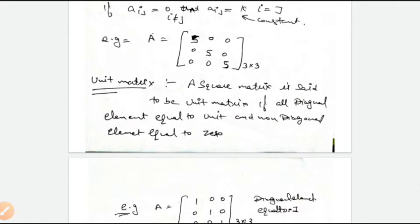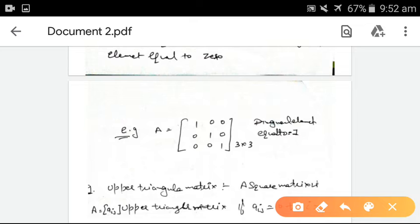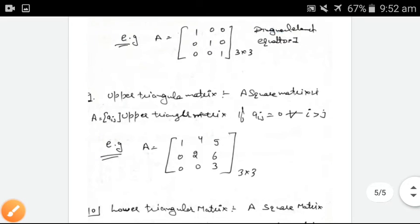A square matrix is said to be a unit matrix if all diagonal elements equal 1 and non-diagonal elements equal 0. We say that diagonal elements A11, A22 are equal to 1, and non-diagonal elements are equal to 0. This is called a unit matrix.